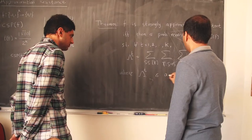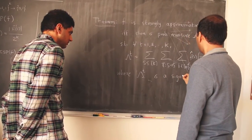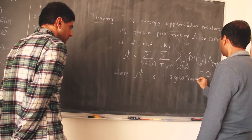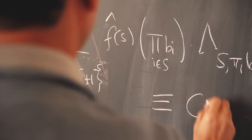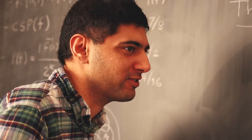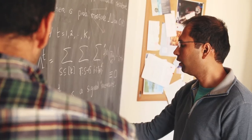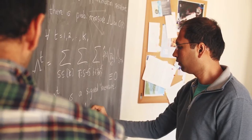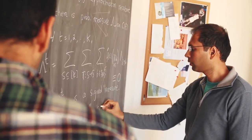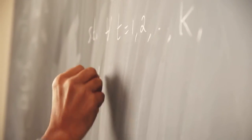It might come as a surprise to you that we are so interested in knowing that certain computational problems cannot be solved — in particular, cannot be solved fast. We ought to investigate both the power as well as the limitations of our methods. From a practical point of view, it's often useful that certain computational tasks cannot be performed. For example, you would be happy to know that a hacker cannot break into your bank account and steal all your money.